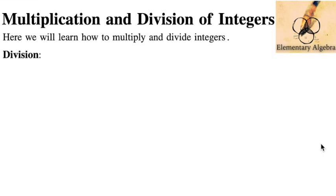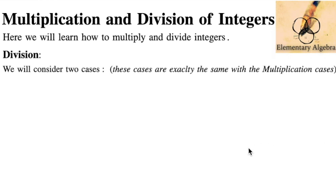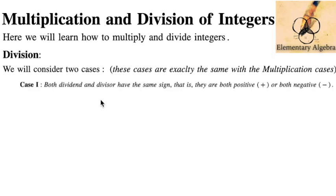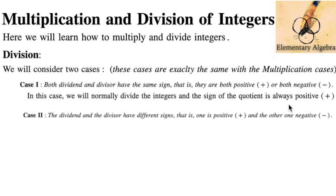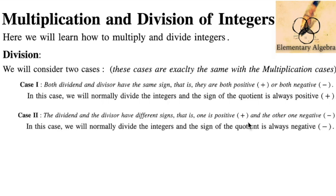We will now cover division of integers — the last of the operations. We follow the same two cases as multiplication. In Case 1, both the dividend and divisor have the same sign — both positive or both negative — and the quotient is always positive. In Case 2, the dividend and divisor have different signs, and the quotient is always negative.